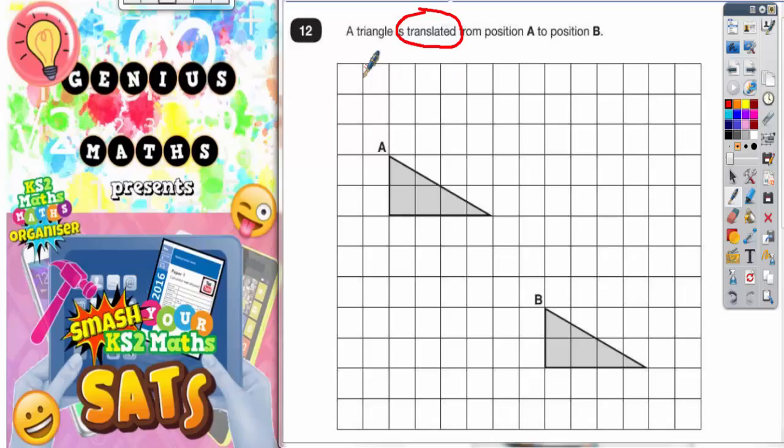Translating in maths is something that you do with shapes and it basically means that you are sliding the shape in a certain direction across the grid. Now you can either slide the shape left or right and you can slide it up or down.